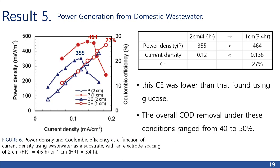Result 5 — Power generation from domestic wastewater: the continuous flow system was also tested with domestic wastewater at a constant flow rate with two different electrode spacings. The maximum power density for the electrode spacing of 2 cm was 355 mW per meter square with a current density of 0.12 mA per centimeter square. When the electrode spacing was reduced to 1 cm, the maximum power density increased to 464 mW per meter square and the current density was 0.138 mA per centimeter square. CE increased with current density, with a maximum CE of 27% at 1 cm electrode spacing. However, this CE was lower than that found using glucose, and the overall COD removal under these conditions ranged from 40 to 50%.